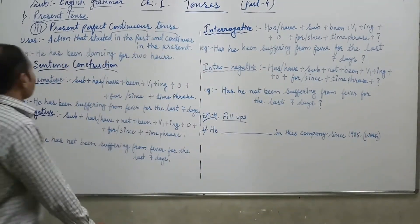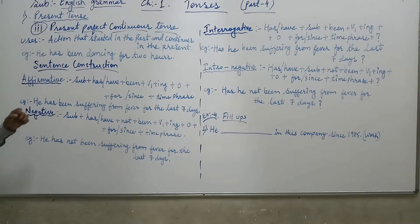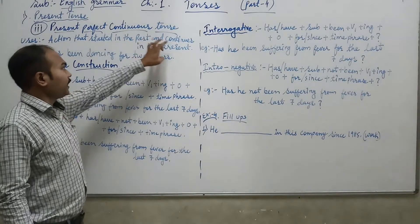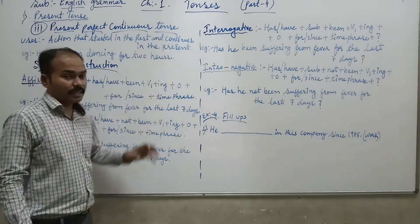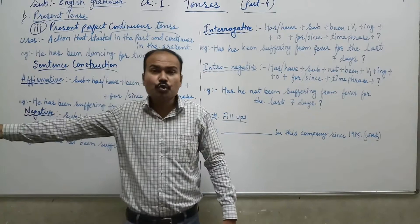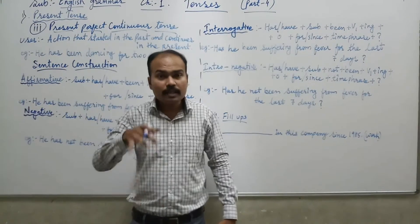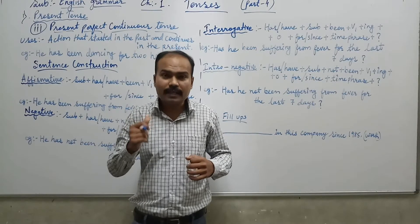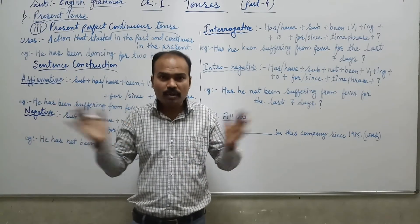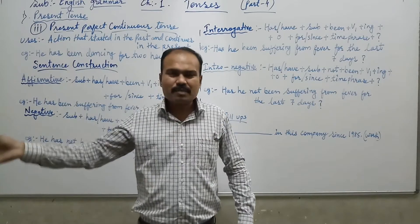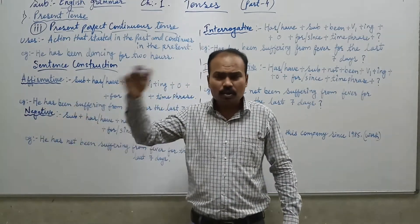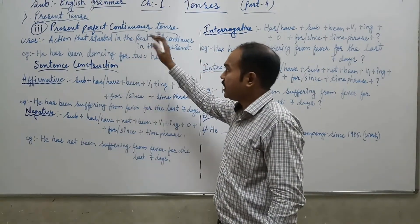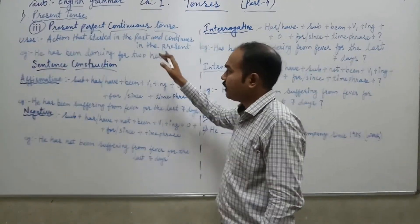We use present perfect continuous tense to show action that started in the past and continues in the present. This tense connects the past tense with the present. Past mein wo action shurru huwa tha aur aaj bhi wo action chal raha hai, continue raha hai. Wo action present perfect continuous tense ke andar hai.